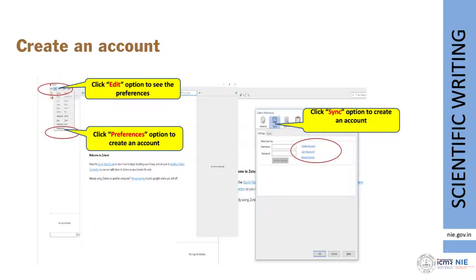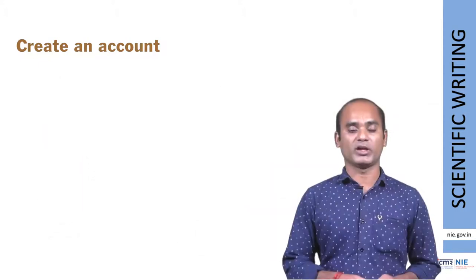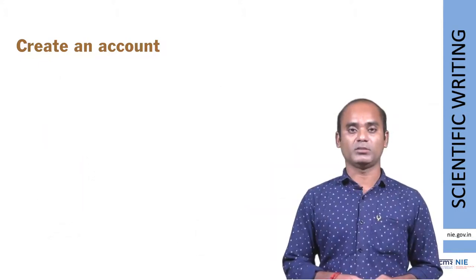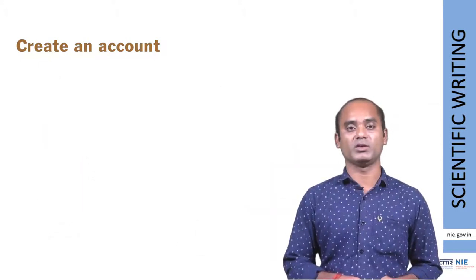To sync, go to Edit in the left panel and select the Preference option. A box will appear — use the Sync option, then enter your username and password and click OK. Now you have created a connection and synced with your online account.